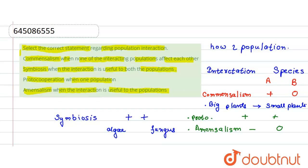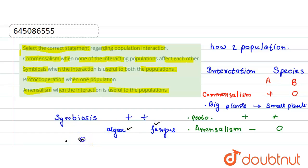So what is the correct option? The statement says symbiosis is when the interaction is useful to both populations. This is the correct option because in symbiosis, both populations are getting benefited. So option 2 is the correct option. I hope your doubt is clear, thank you.